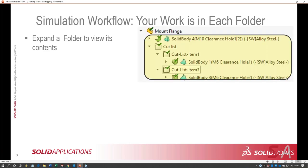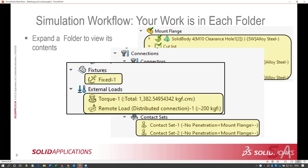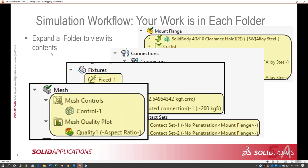Once you've run your study, a results folder will appear with your color plots. The work you build up when creating a study is shown in each folder — expand a folder to view its contents. Here's the parts folder for a model called mount flange with several bodies. The connections folder has bolt group one and bolt group two as virtual bolts, and below that, contact sets showing no-penetration contacts. The fixtures folder has a fixed foot fixture, external loads with a torque and remote load, and the mesh folder showing a mesh control and mesh quality plot.